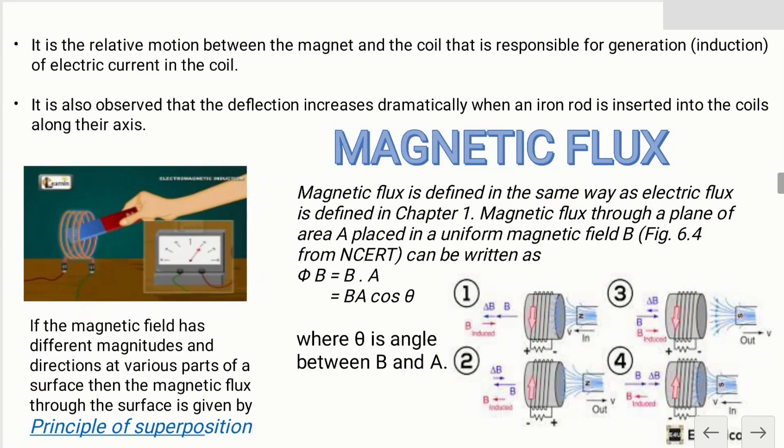When we use a solenoid with a conductor in its core, we can see that the current increases along the axis. How does this happen, and what was observed in this experiment?